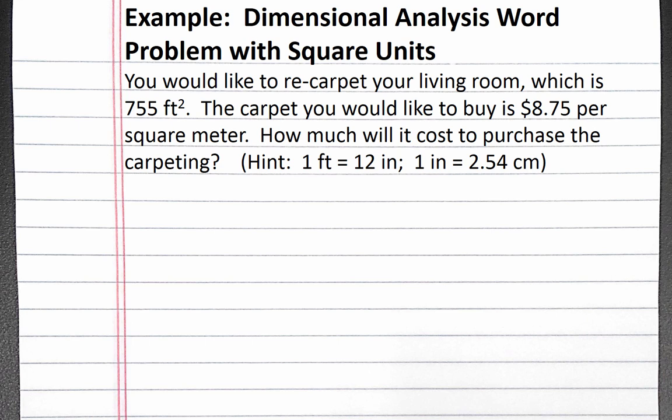We're given that 1 foot equals 12 inches, and 1 inch equals 2.54 centimeters. First, let's analyze the information we're given. We're told the living room is 755 square feet — this is a standalone piece of information. We're also told the carpeting is $8.75 per square meter, which is a conversion factor: $8.75 equals 1 square meter.